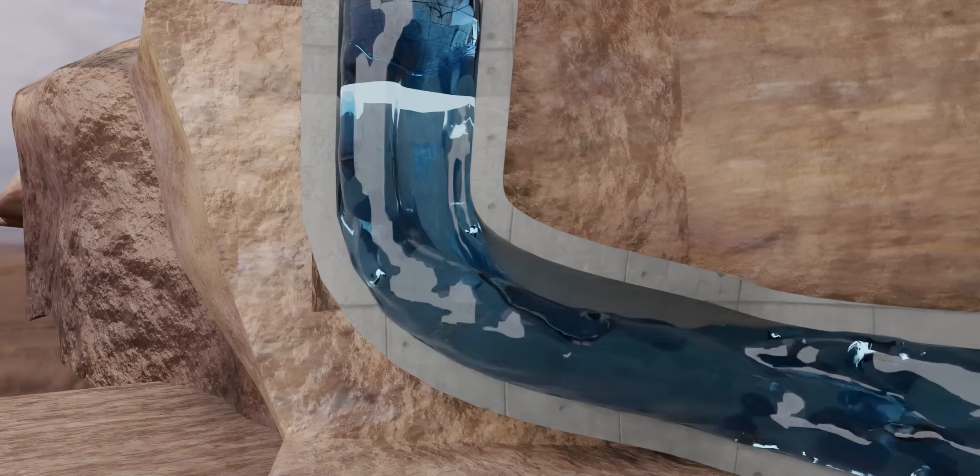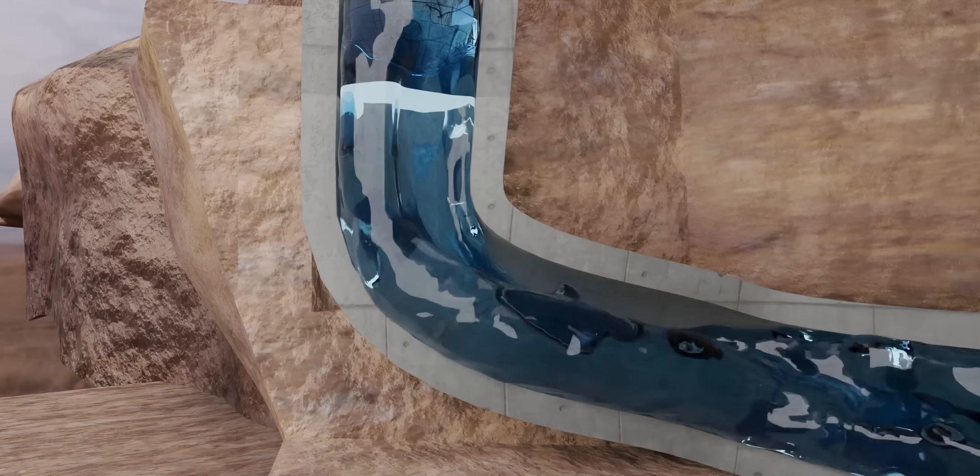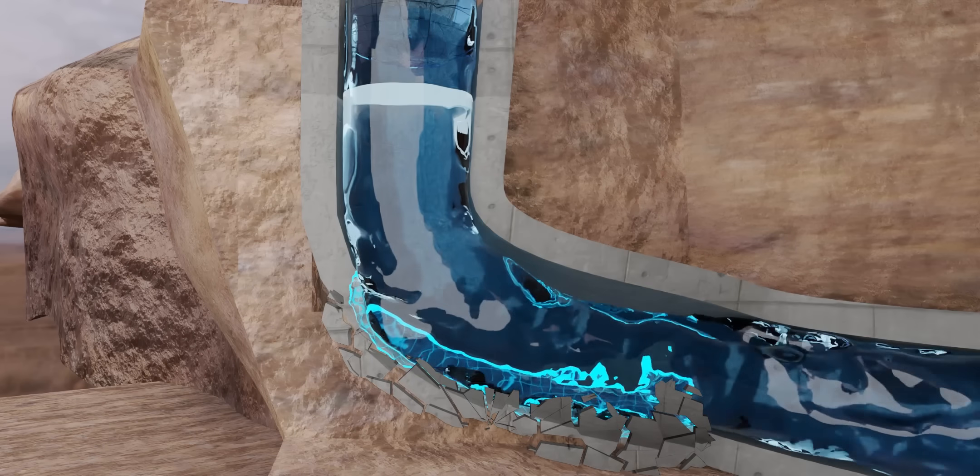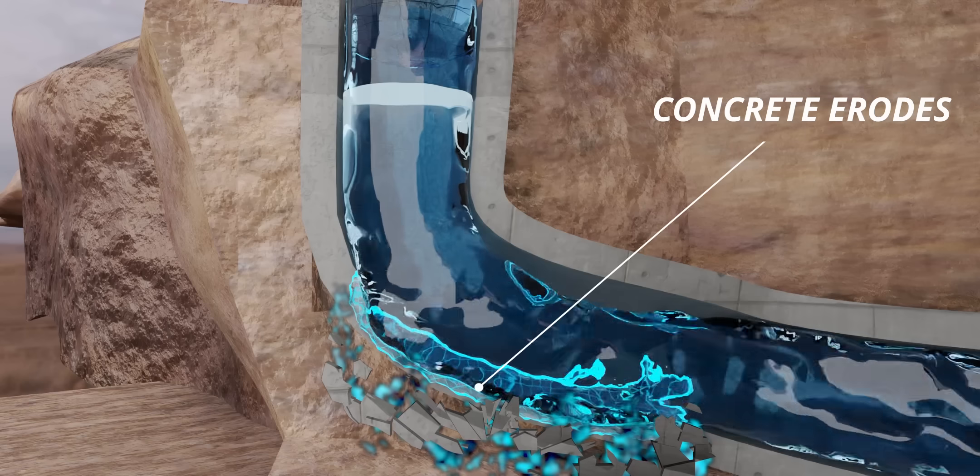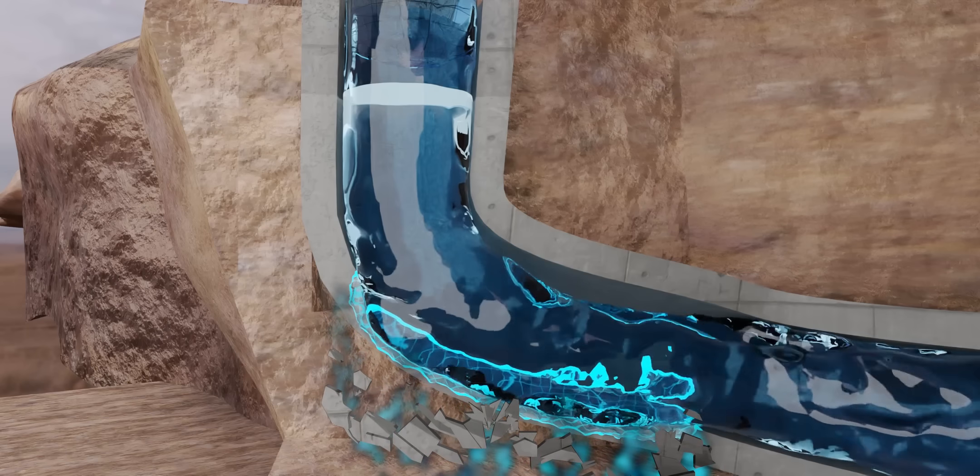Could this concrete tunnel be used as a penstock? Theoretically, yes. But the high-speed water that comes down will have a huge impact force on this concrete lining, which means the concrete will erode over time. This is why engineers use steel lining for the penstock.